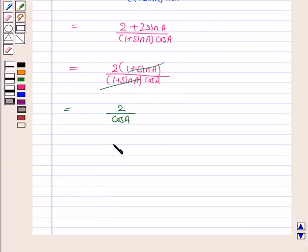Now 1 upon cos A is secant A. So we have 2 into secant A which is RHS. Hence we have proved that LHS is equal to RHS.